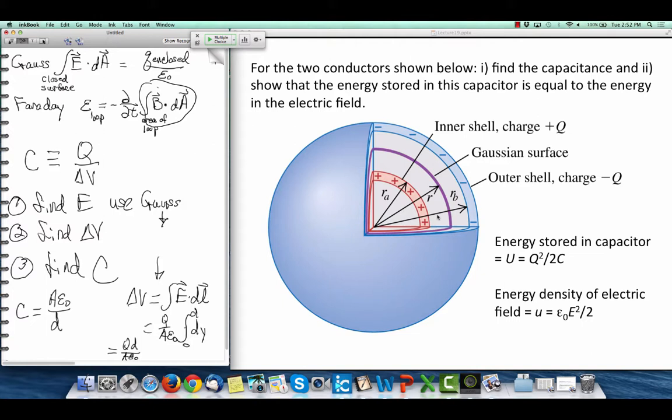That Gaussian surface encloses, q enclosed, is only the plus q from the inner sphere. Nothing from the outer sphere. It encloses plus q from the inner sphere.